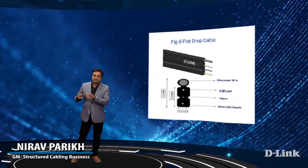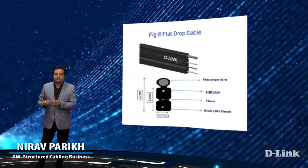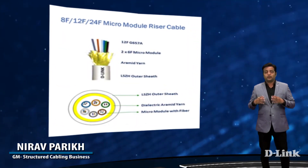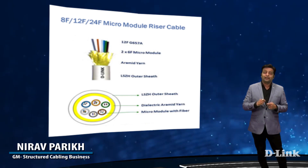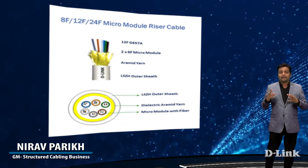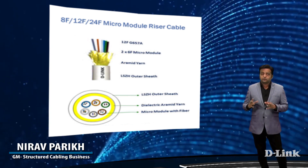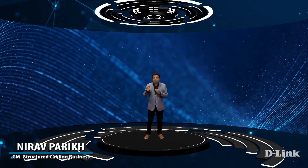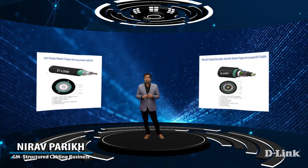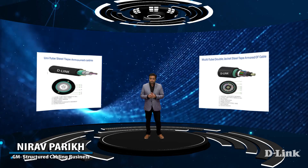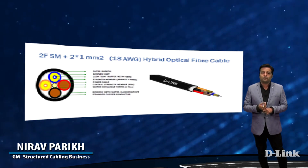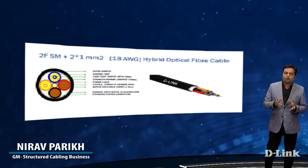If an additional messenger is added to a flat drop cable, it can be used for aerial overhead and manual installation. Micro-module riser cable comes in 8 to 24 fiber configurations with high-strength yarn for pulling applications in ducts. A single module can be used without disturbing other modules, making it suitable for FTTH applications and multi-story buildings. Unitube and multi-tube armored construction can be used in both outdoor ducts and direct burial. D-Link hybrid fiber-optic cable has various applications — it provides a complete power and data system for IP devices and is used in small cells, airports, and stadiums.